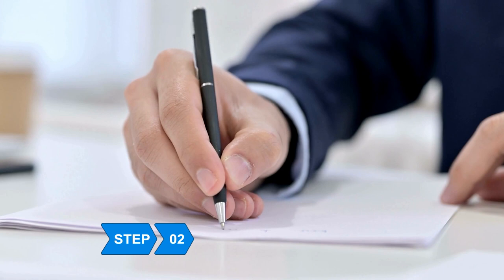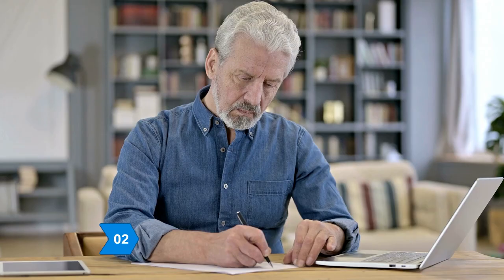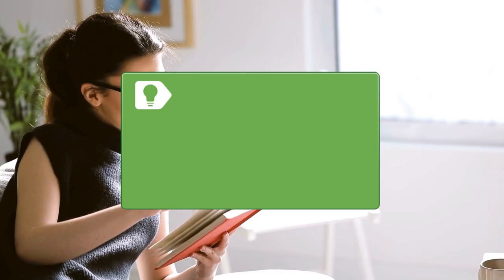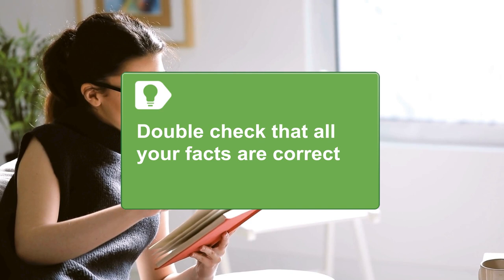Step 2. Refer to each special guest, having prepared by writing down their names, including how to pronounce them. Pay tribute to their successes, linking these to the event as you introduce them. Double-check that all your facts are correct before sharing the information.